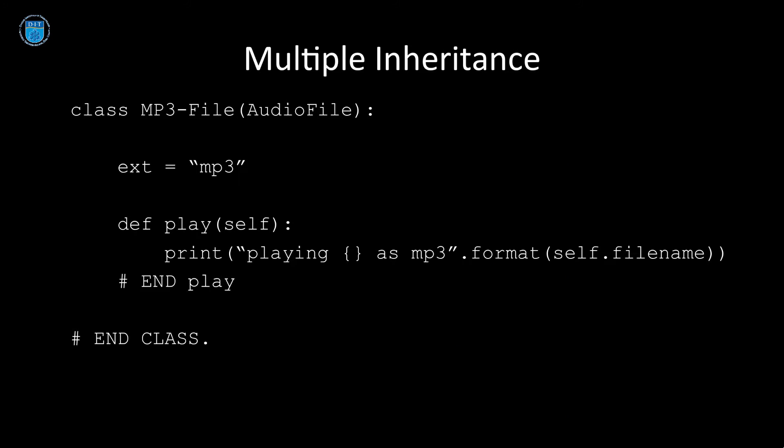Let's look at the subclasses. So MP3 file, what does that look like? Well, it sets the extension name to MP3. So that's how the superclass knows to check what the extension is, and it's play method. We're not going to actually show you how to play MP3s here. All we're doing is we're saying playing the particular filename as an MP3, and that's all that print code does. It just says playing whatever filename you pass in as MP3.